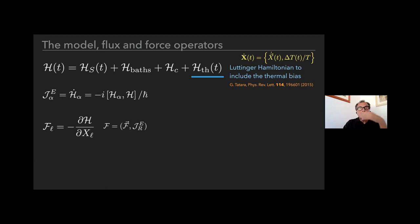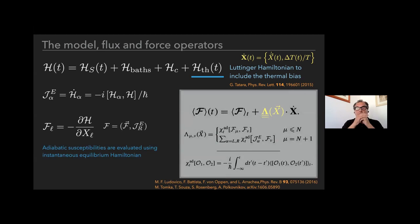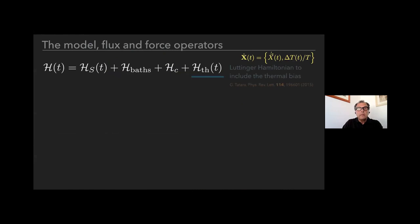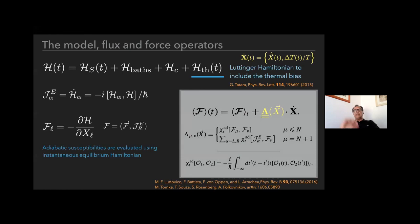One word about the way to insert the temperature bias: we just follow the original idea put forward by Luttinger to include the thermal bias in the Hamiltonian, which essentially uses some kind of potential coupled to the Hamiltonian. We use this formulation done in this work. The derivation is pretty standard: linear response theory.